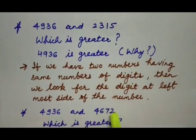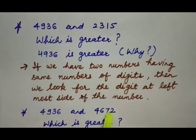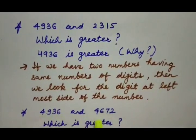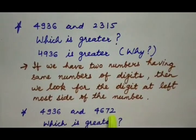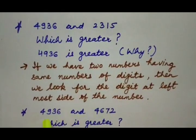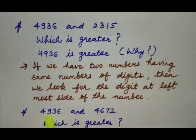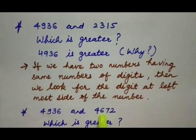If we check carefully, both numbers have the same number of digits — 4 digits each. At the thousands place, here is 4 and here is also 4, so they are the same. To find which number is bigger, we check the digit at the hundreds place. At the hundreds place, here the digit is 9, which is bigger than 6. So 4936 is greater.